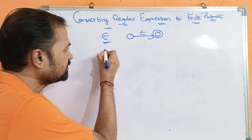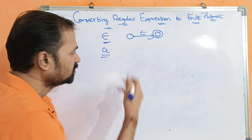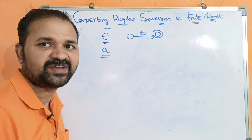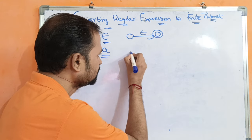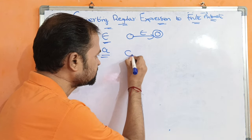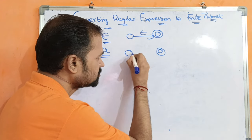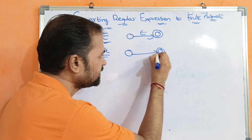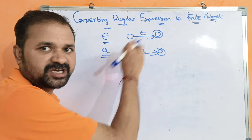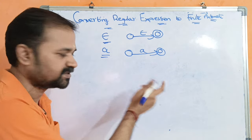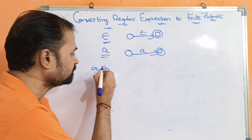If the regular expression is 'a', an input symbol a, here also we require two states. This is the first state, let this be the final state, so on applying a, we will move from this state to this state.